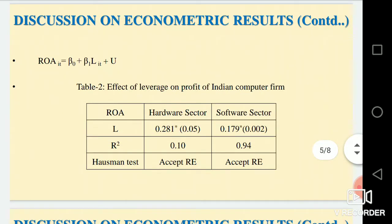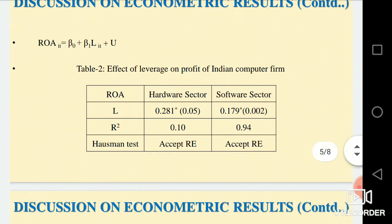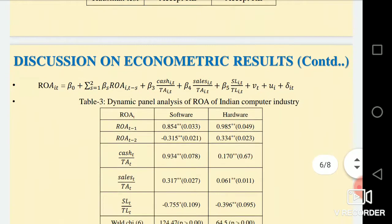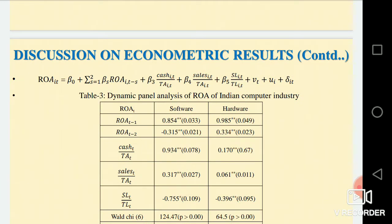In the next slide, we considered the return on assets and leverage — whether there is any relation between return on assets and leverage. Using panel data technique, we find that yes, return on assets positively depends on leverage, and it is also significant, as the Hausman test accepts the random effect model. In the next slide, we estimated the result between return on assets and the ratio of short-term to long-term liability. We used the methodology of Hubbard, Kashyap, and the econometric model specified by Baum, Safar, and Talavera. We used a dynamic panel technique where UI is the unobserved time-invariant fixed effect, and BT captures the unobserved common factors across units of the panel at the firm level.